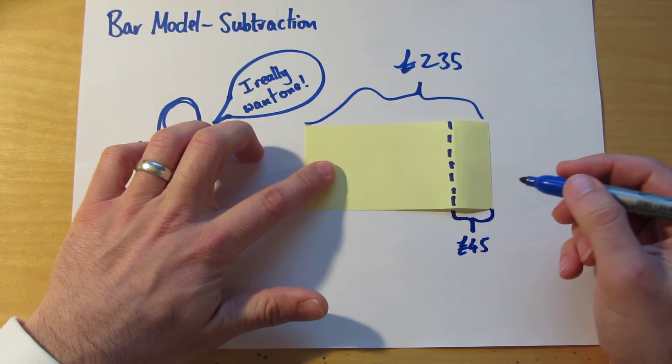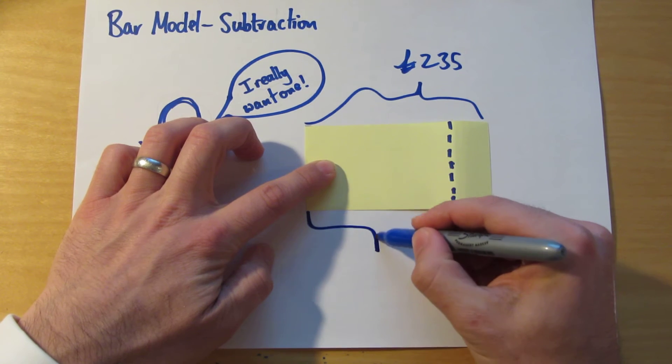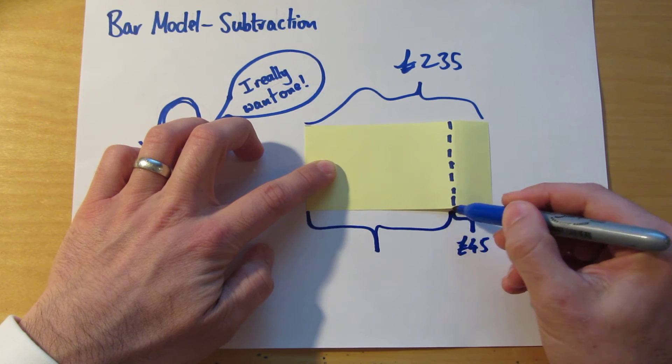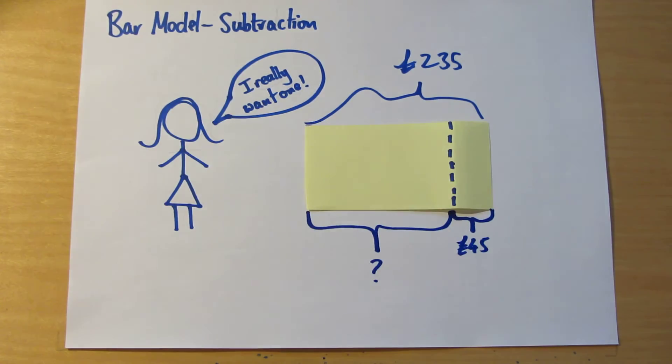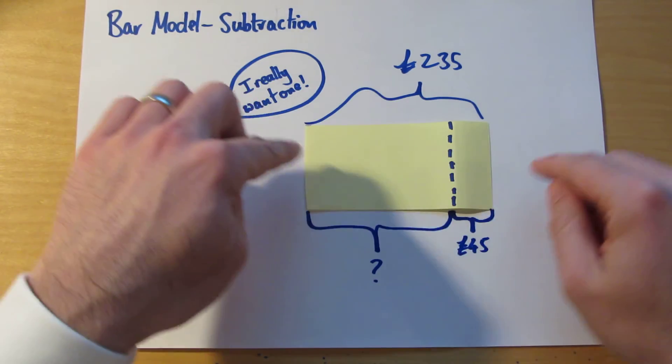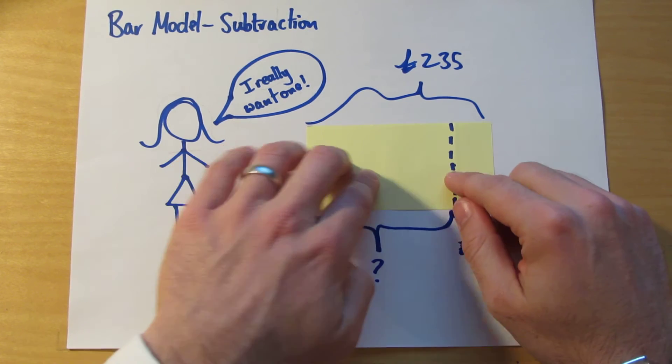Then the bit that I'm after, the bit that she's got left, is presumably this bit here. This is the bit that I'm trying to find out. Can you see just by looking at the way we've set up the bar model, that this has got to be a subtraction problem? I hope you can see that.